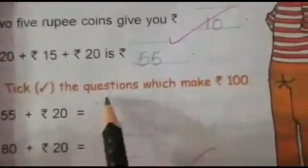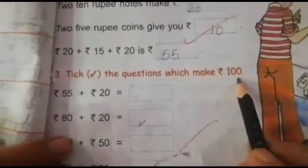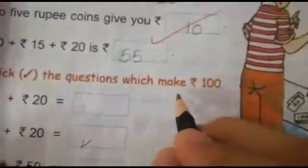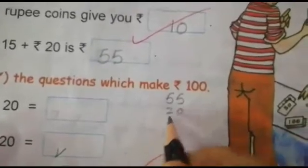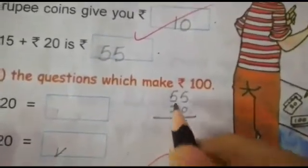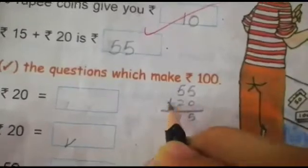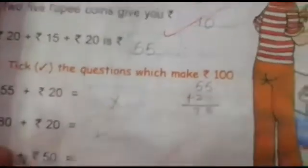Now question number 3 — tick the questions which make rupees 100. First: 55 rupees plus 20 rupees. We add them and get 75. Is it 100 rupees? No. We will put a cross.